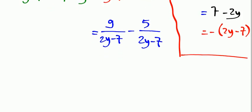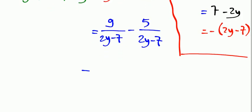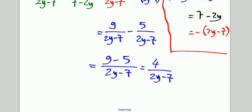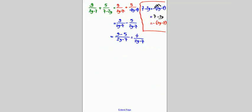Let's continue. We now write it over the same denominator, 2y minus 7, and the numerator will be 9 minus 5. At the end the answer will be 4 over 2y minus 7.